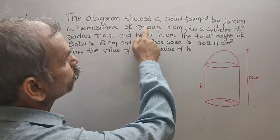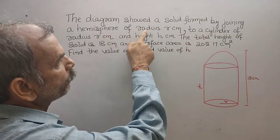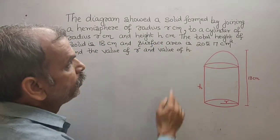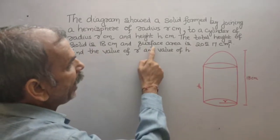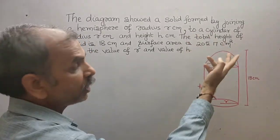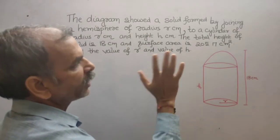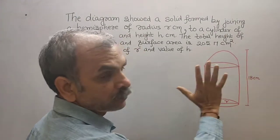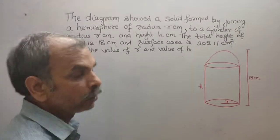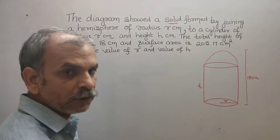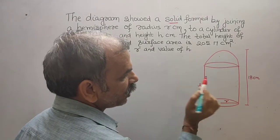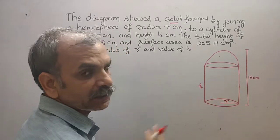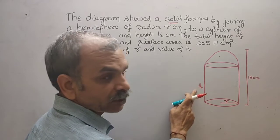The question shows a solid formed by joining a hemisphere of radius r centimeters to a cylinder of radius r centimeters and height h centimeters. The total height of the solid is 18 centimeters and the surface area is 205π square centimeters. Find the value of r and h. This is a full solid — not hollow. The hemisphere is joined to the cylinder, and both share the same radius r. The height of the cylinder is h and the total height is 18.